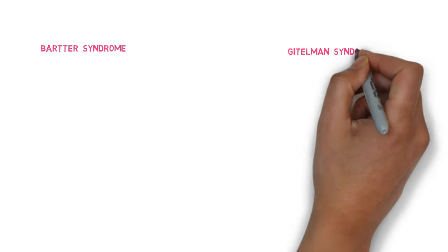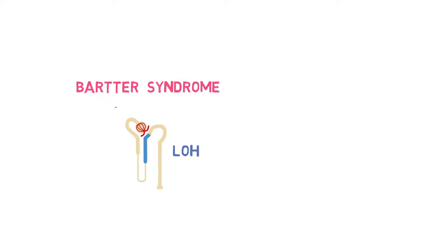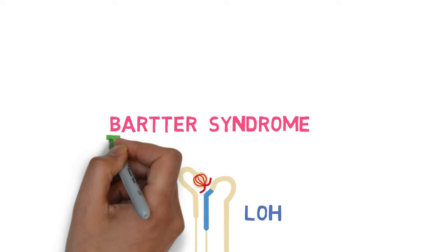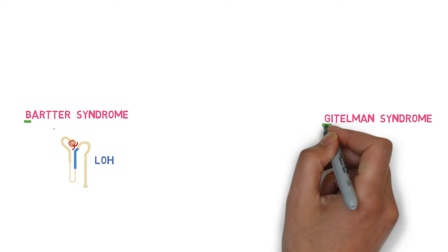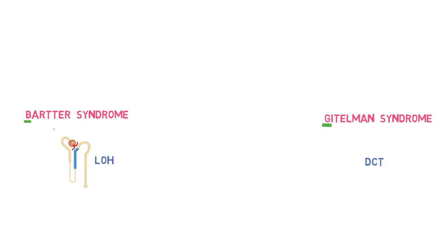Now, Bartter syndrome is a defect in loop of Henle while Gitelman is a defect in distal collecting tubule. You can remember this as the B of Bartter comes before the G of Gitelman. Similarly, loop of Henle comes before DCT.